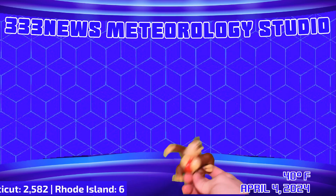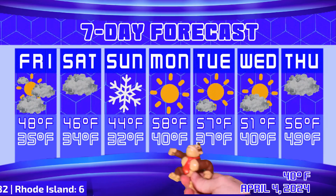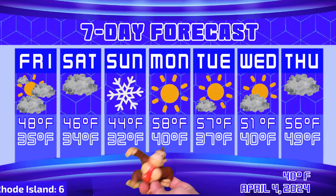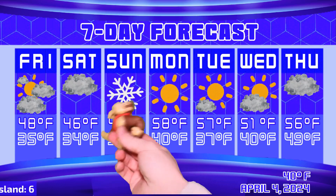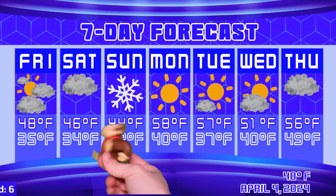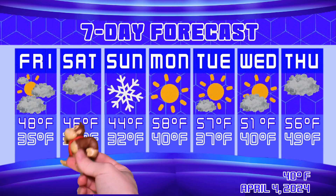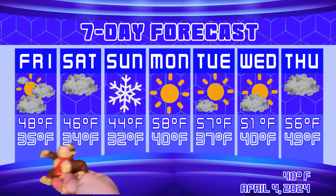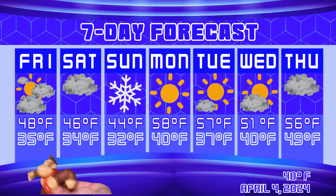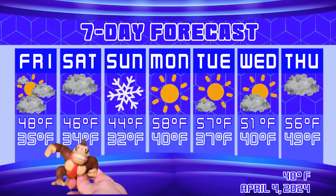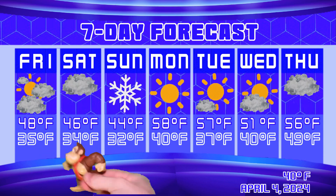Now on to your 7-day forecast. We're actually going to get started with tomorrow instead of today, even though it is only 2 p.m. on Thursday. So, tomorrow — Friday — we are going to be looking at a high of 48, a low of 35, and mostly clear skies. We are still going to be in some cooler conditions throughout the rest of this week. However, at the beginning of next week, we're actually going to get into some really nice springtime conditions, as you'll see.